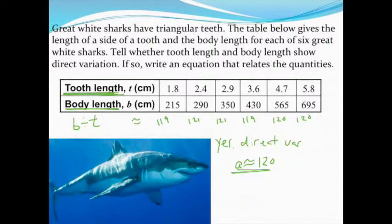I can actually go one step further and write an equation for this. Remember, it's y equals a times x, or in this case, b equals a times x. We're going to say b is about 120, and then times the tooth length. So I can use this equation then, if my results are accurate, to predict some other body lengths of sharks based on the teeth I might find.